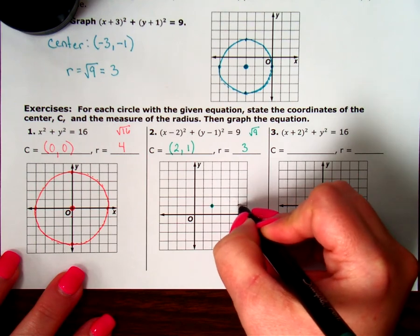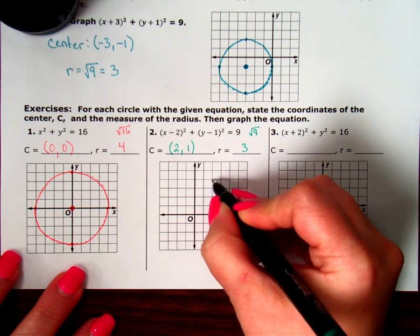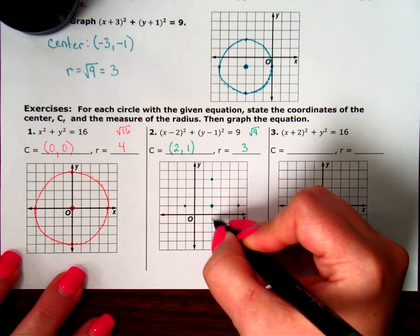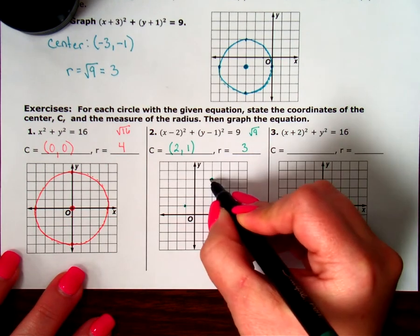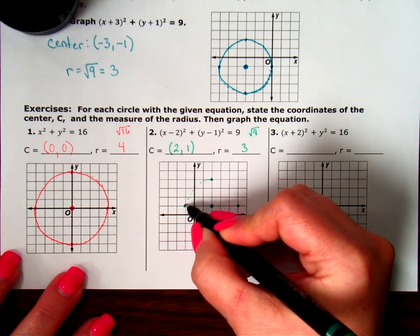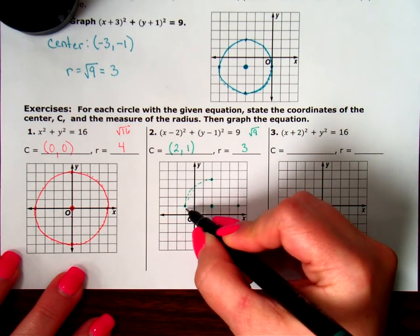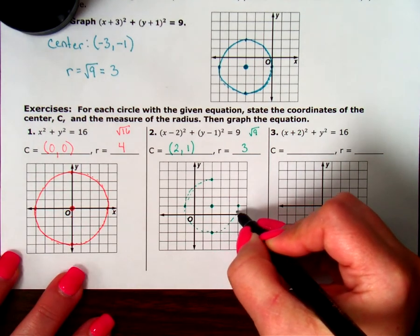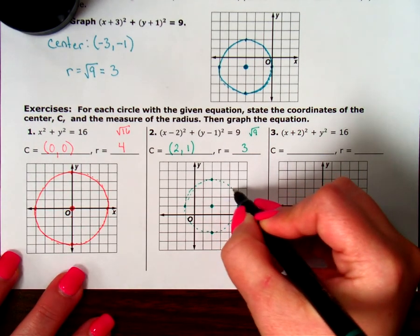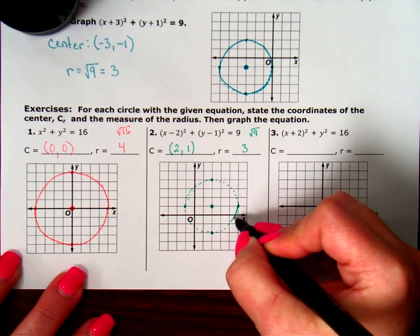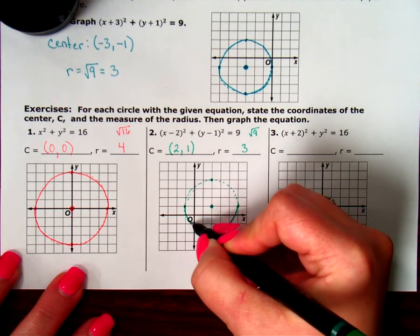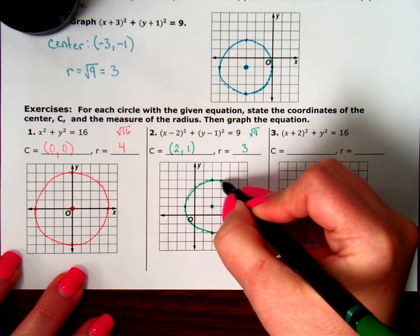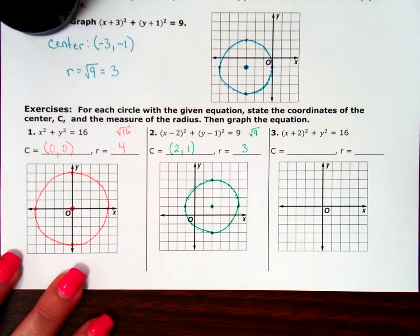1, 2, 3. 1, 2, 3. 1, 2, 3. And 1, 2, 3. And then try and make a circle as best I can. It doesn't have to be perfect. Here is my beautiful, bumpy little circle.